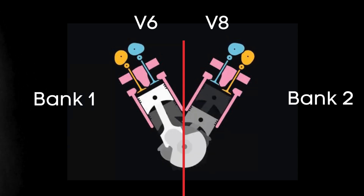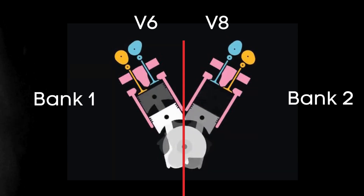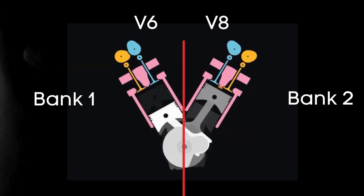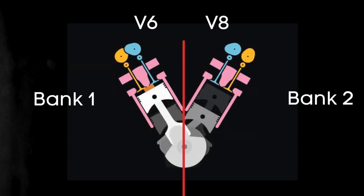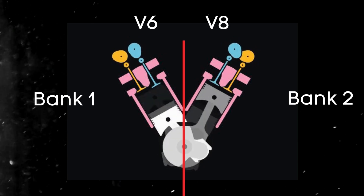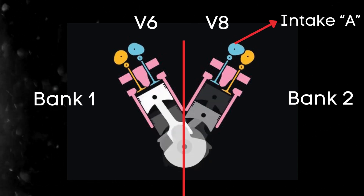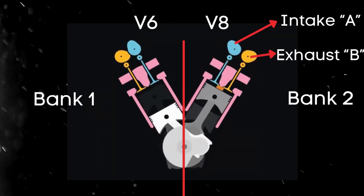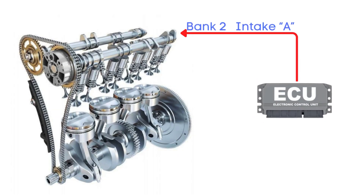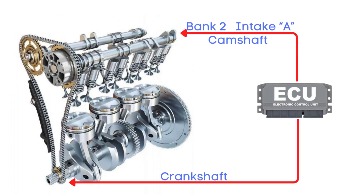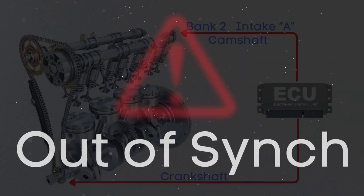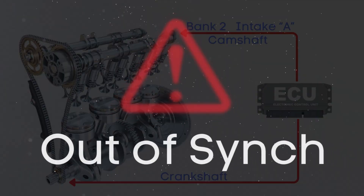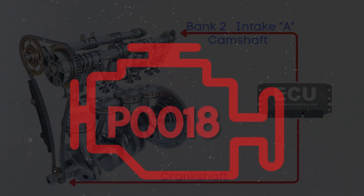For dual overhead camshaft (DOHC) engines, there are two camshafts per bank: intake and exhaust. When the ECU detects that the bank 2 intake camshaft position and crankshaft position are out of sync by a specific degree, it triggers the P0018 code.